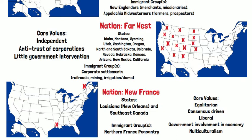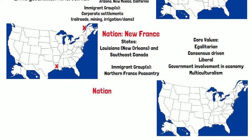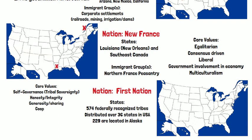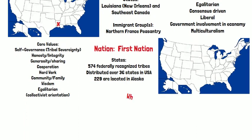The last nation identified by Woodard was First Nation, which is the combination of all of the Native American tribes located in North America. There are 574 federally recognized tribes distributed over 36 states in the USA, and 229 are located in Alaska. The core values here are self-governance, honesty and integrity, generosity and sharing, cooperation, hard work, community and family, wisdom, egalitarianism, and a collectivist orientation.